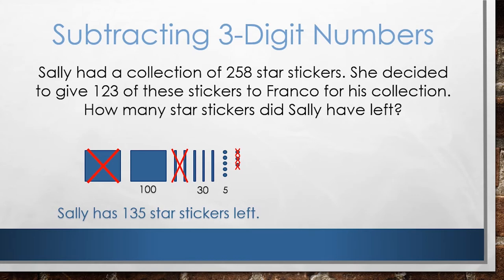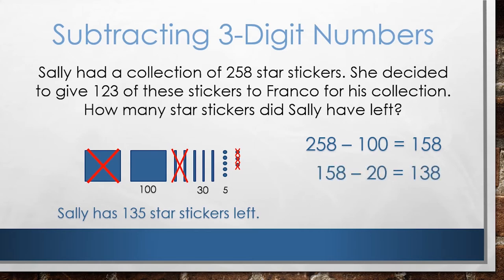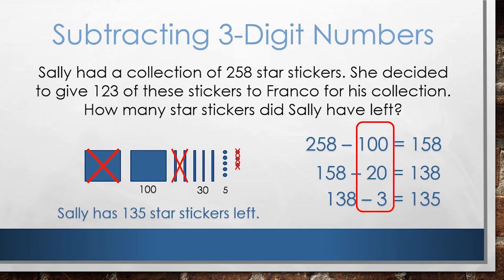We could also show our solution by using equations to show how we keep one number whole and break apart the amount being subtracted into hundreds, tens, and ones. So we would start with the equation 258 minus 100 equals 158. Then we would subtract 20 from 158, which equals 138. Finally, we would subtract 138 minus 3, which equals 135. The equation shows that we started with 258 and subtracted the 123 in parts by first subtracting 100, then 20, then 3. So Sally will be left with 135 stickers.